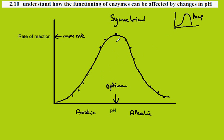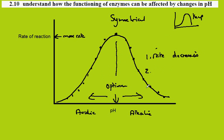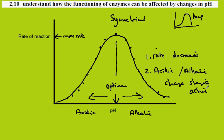As conditions become more acidic or more alkaline, the rate decreases. The explanation for this is that the acidic or alkaline conditions change the shape of the active site, and this slows the reaction.